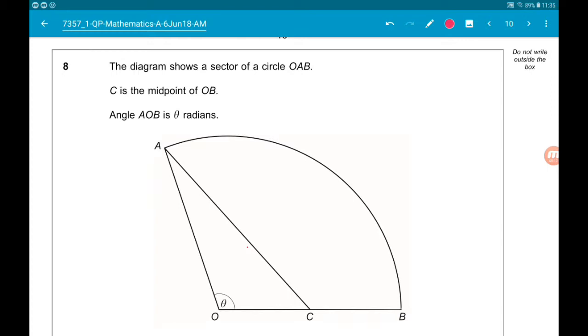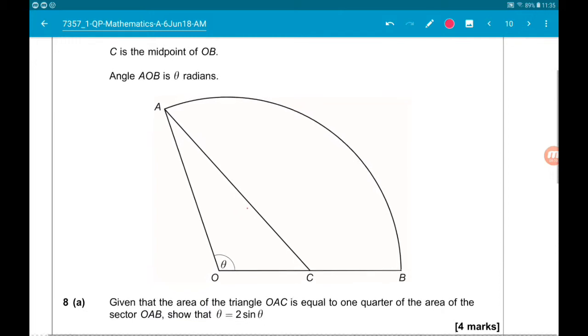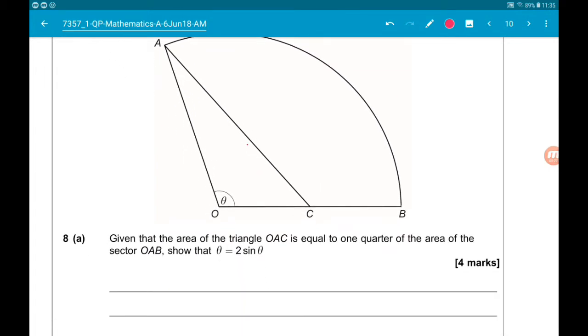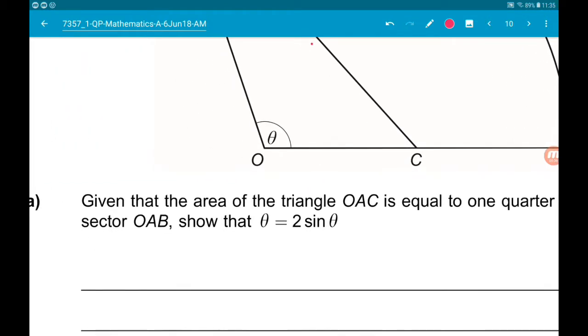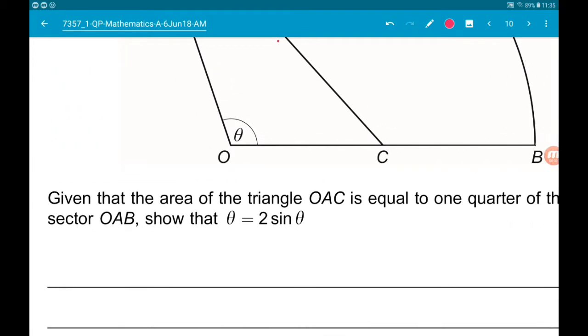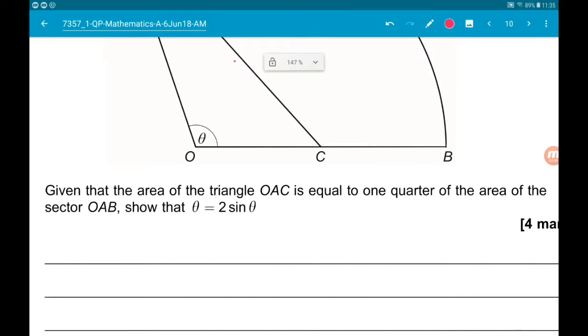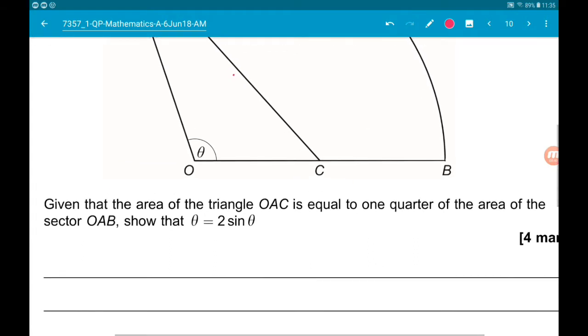C is the midpoint of O, B. Angle A, O, B is theta radians. We've also got a triangle inside the sector. Now, we're asked, given that the area of the triangle O, A, C is equal to one quarter of the area of the sector, show that theta is equal to two sine theta.